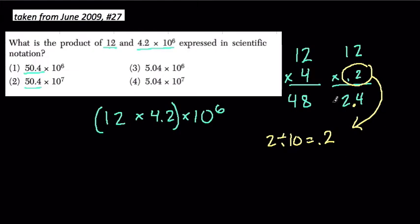Anyway, so here, if we add these two together, we get 50.4 times 10 to the sixth. Now, this is the correct value, except we want to write it in scientific notation. Our first number is too large, so how can we change that?